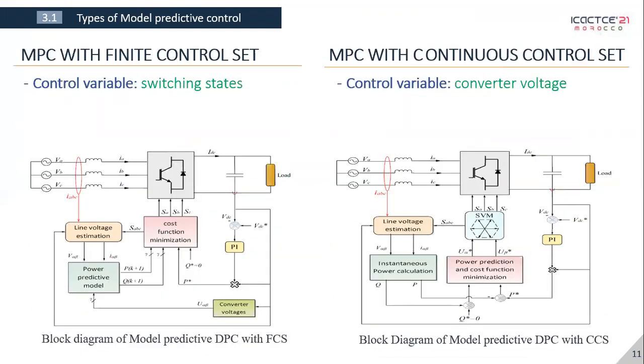Now let's talk about the most important differences between FCS and CCS. Well, the first and the most obvious is the control variable. And then there is the switching frequency which is variable for FCS and constant for CCS. The last important difference is the number of computations.